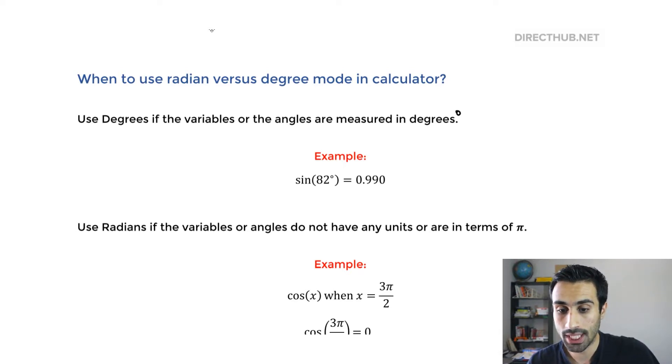Degrees has that degree symbol. The degree symbol is that circle. In this example, it's going to be sine of 82 degrees. You want to keep your calculator in degrees anytime you're given degree units. So when you do this, you should get this in degree mode.